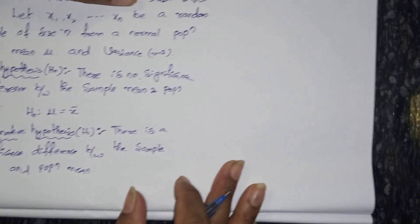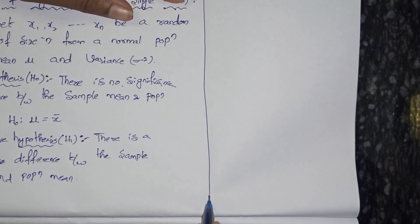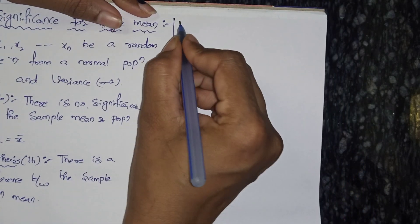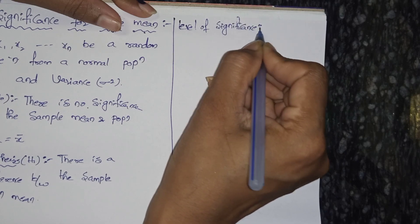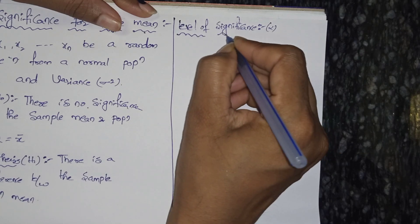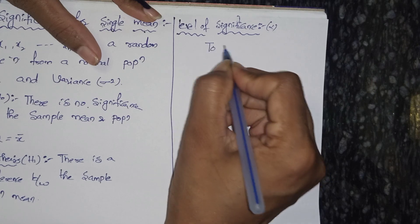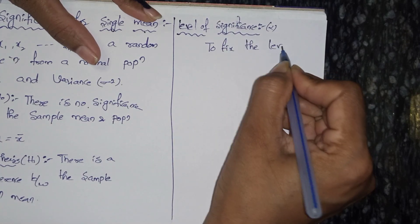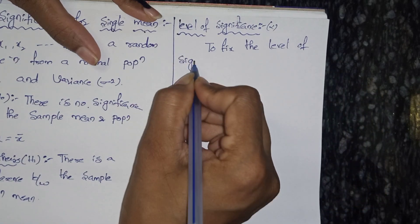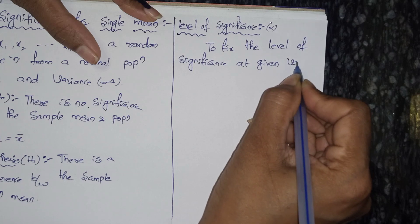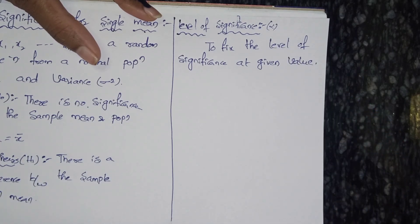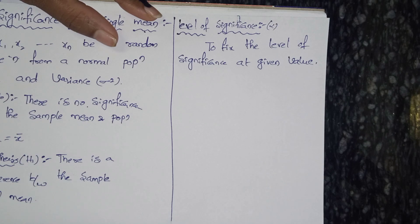Third step is level of significance. Level of significance is denoted by alpha. We fix the level of significance at a given value — maybe 90%, 95%, 98%, 5%, 1%, or 2%. We will fix the table value from the question.